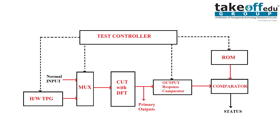BIST describes that whatever test you will do — as in Design for Test — whatever logic you design, you can test it by self. So it is a self-test. We'll build one architecture which gives a self-test for the design you have undertaken. That design is called Circuit Under Test, which is nothing but DFT — Design for Test.